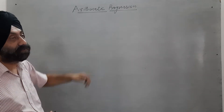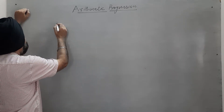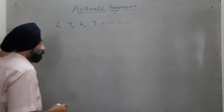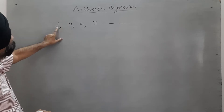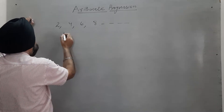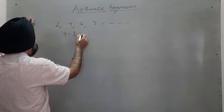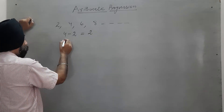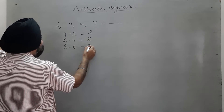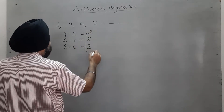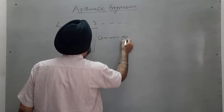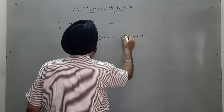First of all, what is Arithmetic Progression? Say I have some numbers: 2, 4, 6, 8 and so on. If I take second minus first, the answer is 2. Then 6 minus 4 is 2, and 8 minus 6 is 2. This is called the common difference.